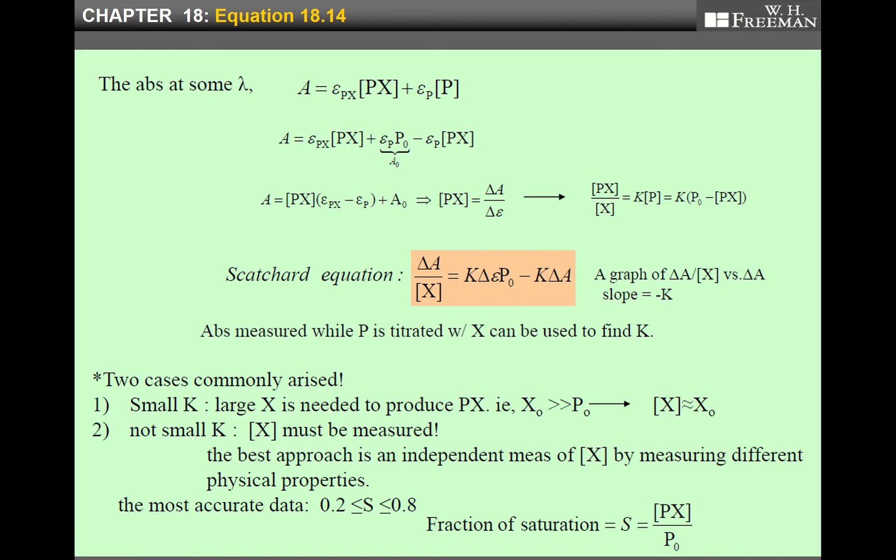Taking this part as Y and ΔA as X, we plot and then the slope must be minus K and this one is Y intercept. But we meet two cases. First one is when K value is small. Equilibrium constant is small. In this case, to get significant amount of PX, you need to add large X. And then X₀, total concentration of X, is much larger than P₀. And then in this case, it can be approximated. The equilibrium concentration of X almost equals total concentration of X₀.